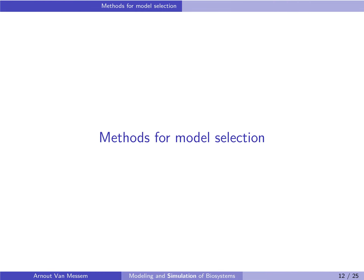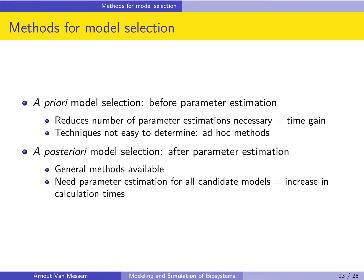Let's take a look at the methods for model selection. In model selection we make a distinction between a priori model selection, where we make a model selection before parameter estimation, and a posteriori model selection, where we do the model selection after parameter estimation.